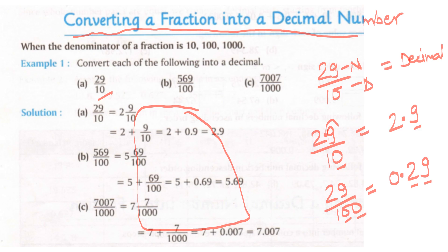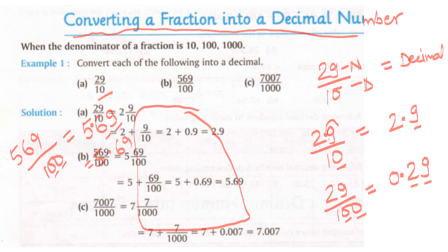For example, 569/100: how many zeros? Two zeros. Write 569, then from the back count 1 and 2 digits and put the decimal. The answer is 5.69. Just count how many zeros are there, then count those many digits from the back and put the decimal.